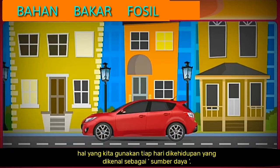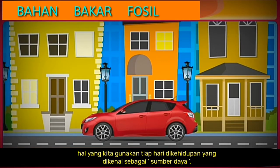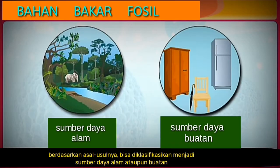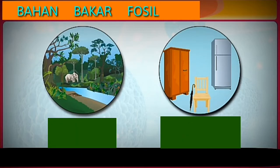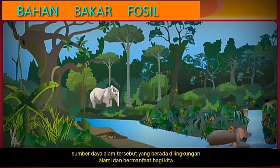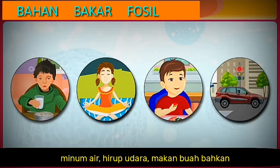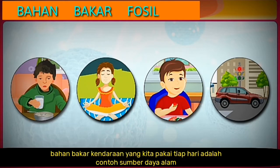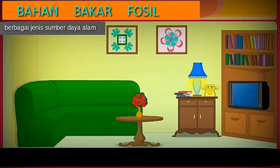The things that we use in our daily lives are known as resources. Based on the origin of the resources, they can be classified into natural resources or man-made resources. Natural resources are those which are present in the environment naturally and are useful to us. The water that we drink, the air that we breathe, the fruits that we eat, and even the fuel that we put in our car are some examples of natural resources.